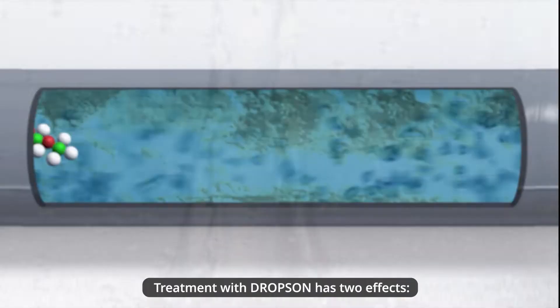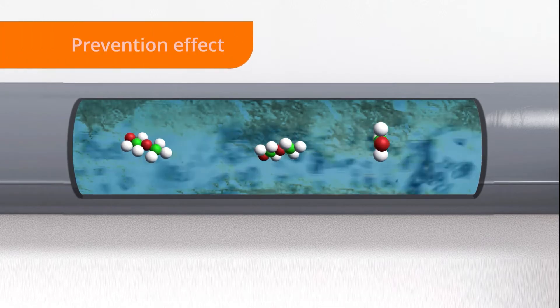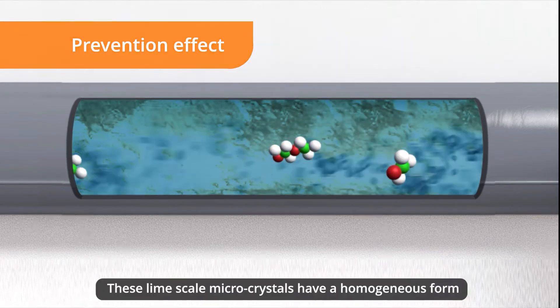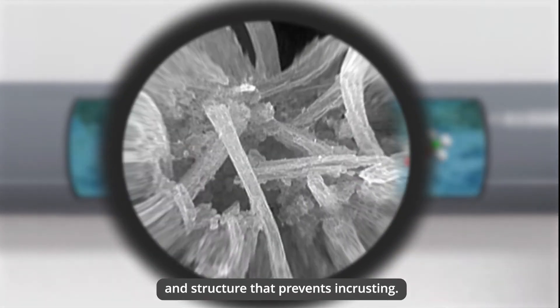Treatment with Dropson has two effects. The prevention effect: these limescale microcrystals have a homogeneous form and structure that prevents encrusting.